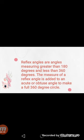First of all, I will explain what is a reflex angle. Reflex angles are angles measuring greater than 180 degrees and less than 360 degrees. The measure of a reflex angle is added to an acute or obtuse angle to make a full 360 degree circle. So in this definition, we see that a reflex angle is the larger angle — more than 180 degrees but less than 360 degrees.